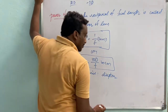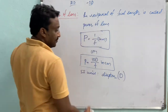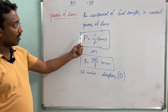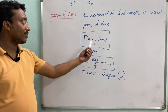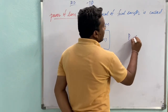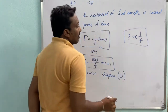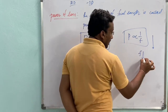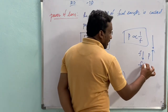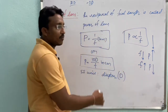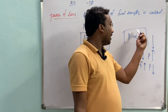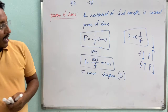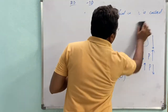The SI unit of power of a lens is diopter, designated with capital D. Power of a lens is inversely proportional to the focal length — if focal length decreases, power of the lens increases, and if focal length increases, power of the lens decreases.